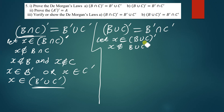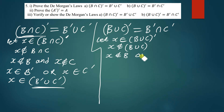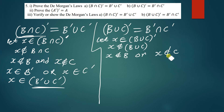So if x is a member of (B∪C)ᶜ, it means that x is not a member of B∪C. And if x is not a member of B∪C, this implies that x is not a member of B, or x cannot be a member of C. So it means x is not a member of B and x is also not a member of C.